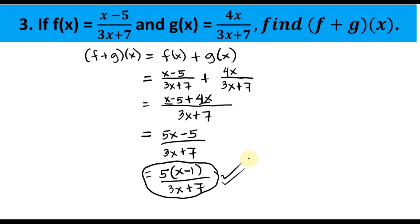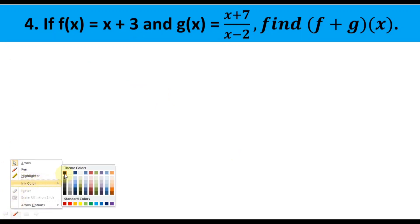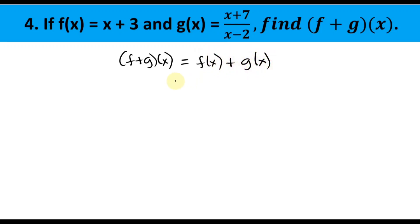Number 4: if f(x) = x + 3 and g(x) = (x + 7) / (x − 2), find (f + g)(x). Using the formula: (f + g)(x) = f(x) + g(x). Substituting: f(x) is x + 3, plus g(x) which is (x + 7) / (x − 2).